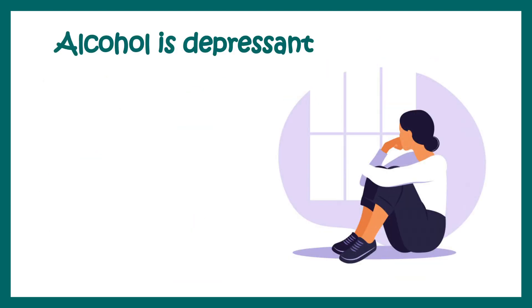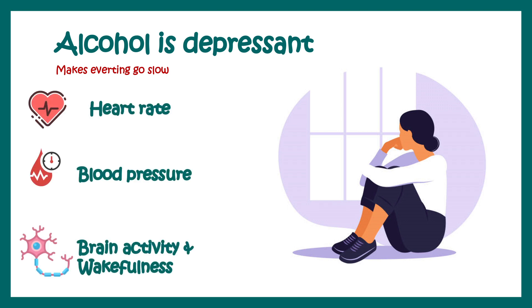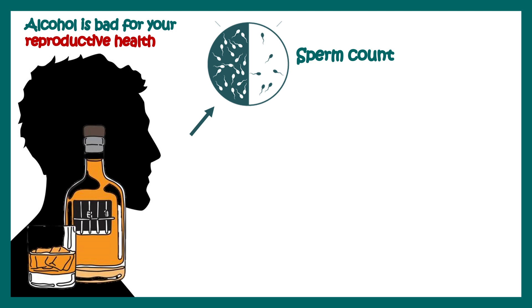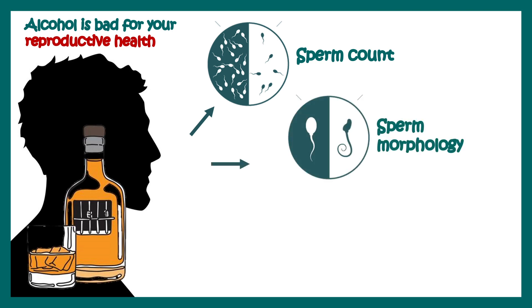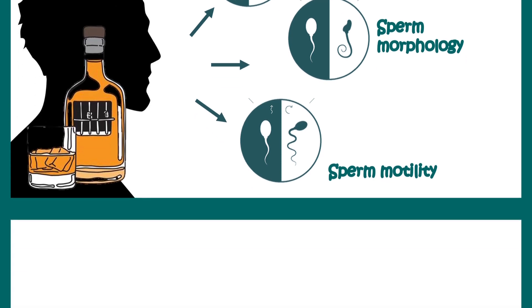Overall, alcohol is a depressant — it makes everything slow down. It reduces your heart rate, reduces blood pressure, reduces brain activity, brings down your consciousness, and makes you feel dizzy. Alcohol consumption also has a bad toll on reproductive health: it reduces sperm count, changes the morphology and motility of sperm, all of which reduce the chance of successful reproduction.